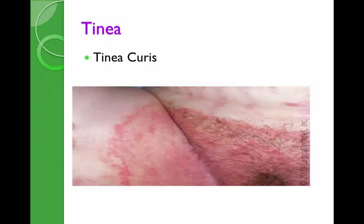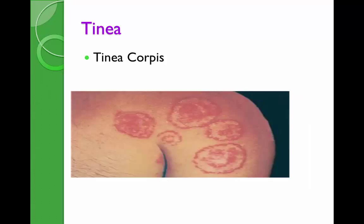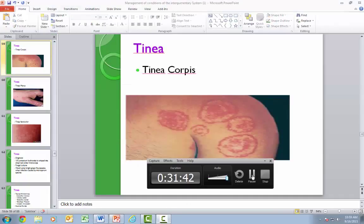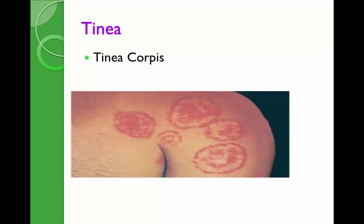Tinea cruris is located in the inguinal area — you can see the raised borders. Tinea corporis is caused by the same dermatophyte and produces pink to red annular patches or plaques with raised scaly borders that spread peripherally and tend to have a clear center. This is called ringworm. It can appear in round shapes and is most commonly the form with a clear center.